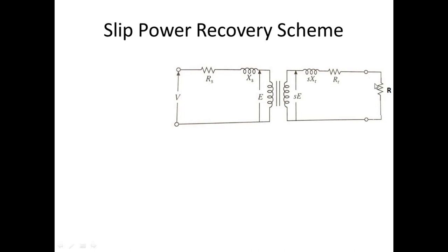The second method is the slip power recovery scheme. Considering the previous rotor resistance control case, a resistance is connected to the rotor circuit. The mechanical output power equals the air gap power Pg minus the rotor copper loss across Rr minus the power loss across the external resistance. So Pm = Pg − Pr_copper_loss − P_external_loss.